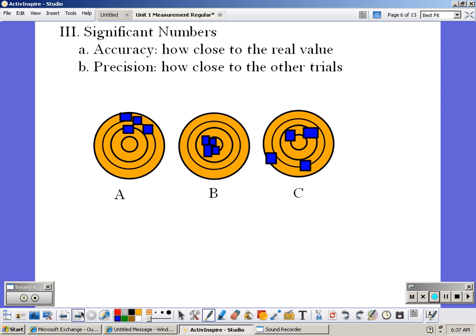Precision is how close you are to the other trials. So if you measure an object five times, did you get the same measurement five times? That would be precise. It just has to be grouped together. It doesn't have to be the exact same number. So if we look at our pictures, A is precise. Even though they're not all on top of each other, they're in the same area. So that would be precise. B also shows precision, because they're all grouped together.